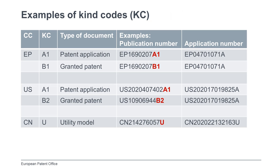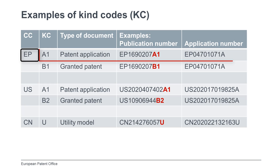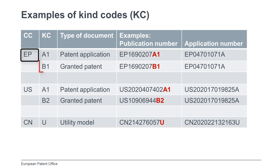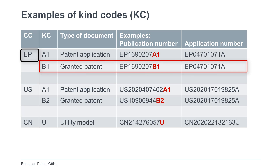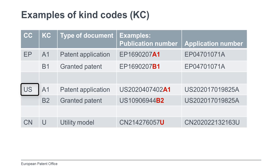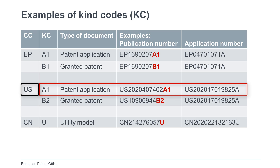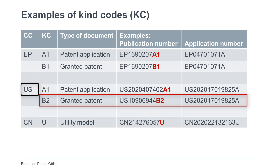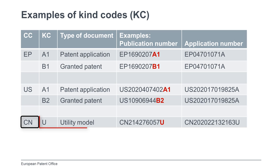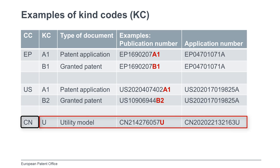For example, for European patent documents, the kind code A1 identifies patent applications published with the search report. The kind code B1 identifies granted patents. For United States patent documents, the kind code A1 also identifies patent application publications, while the kind code B2 identifies granted patents. For China, the kind code U identifies utility models, etc.